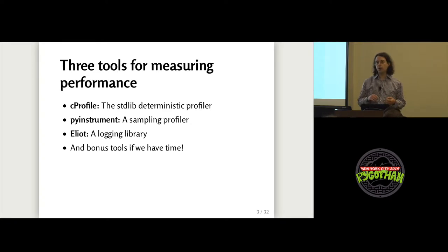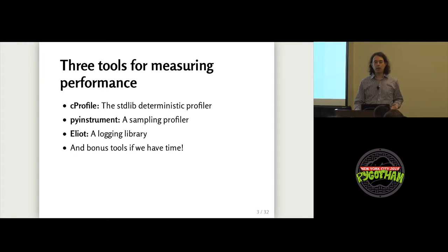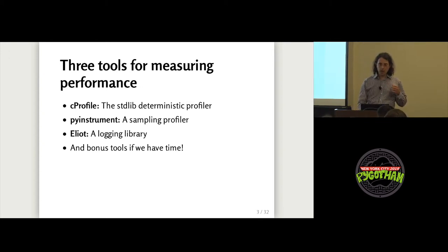I'm going to be talking about three different tools. First, CProfile, which is a Python profiler built into the Python standard library — it's a deterministic profiler, and I'll explain what that means. Second, PyInstrument, which is a sampling profiler — again, I'll explain what that means. And third, Eliot, which is a logging library. These are exemplars of their categories, so there are multiple sampling profilers and they tend to have similar strengths and weaknesses. If we have time I might mention a few other tools; if not, you'll find them in the slides.